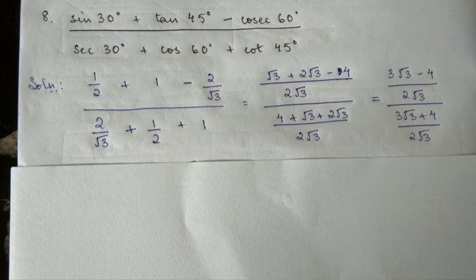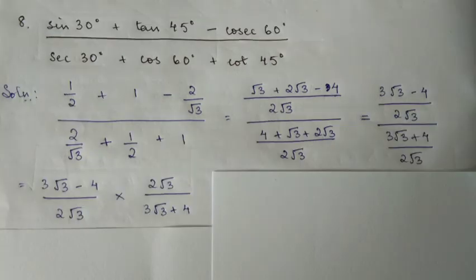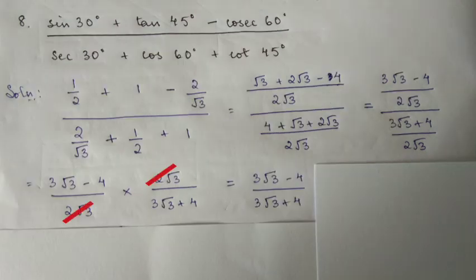When we have fraction divided by fraction, we convert division to multiplication. 3 root 3 plus 4 by 2 root 3 times the reciprocal, which is 2 root 3 by 3 root 3 plus 4.